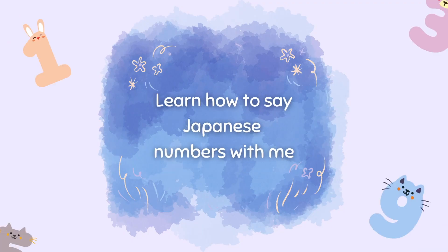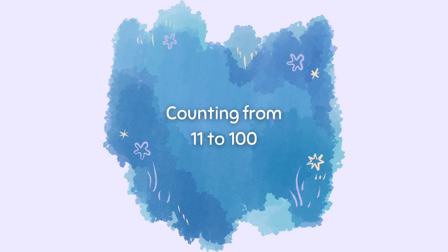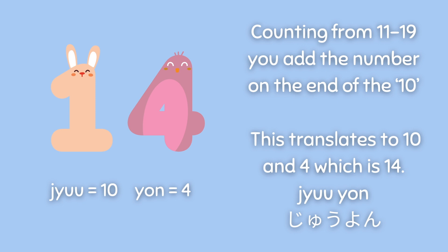Learn how to say Japanese numbers with me, counting from 11 to 100. Counting from 11 to 19, you say the word for 10, which is 十, and add the digits. So 14 would be 十四, as 十 is 10 and 四 is 4.